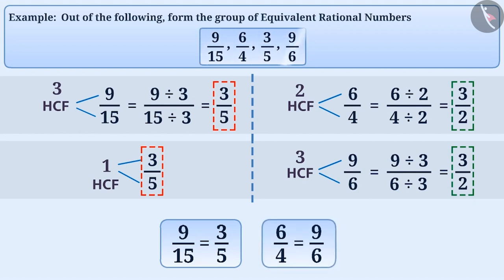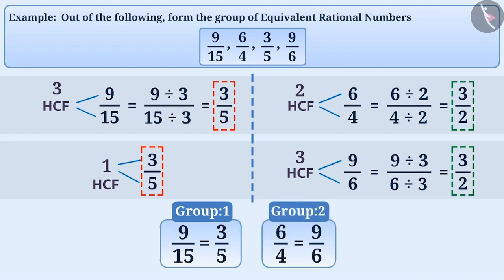Therefore, one of the two groups of equivalent rational numbers among the given numbers is 9 by 15 and 3 by 5, and the second group is 6 by 4 and 9 by 6.